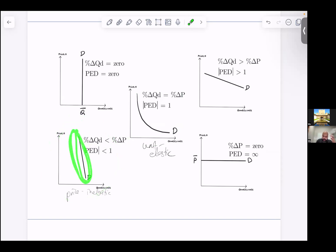If the percentage change in quantity demanded is greater than the percentage change in price, we say that demand is price elastic, and the curve will be relatively flat. It's a relatively flat demand curve. In this case, the absolute value of PED is greater than one when demand is price elastic.